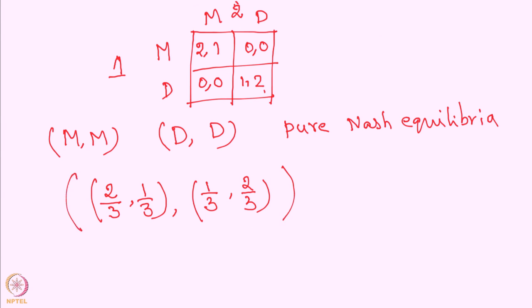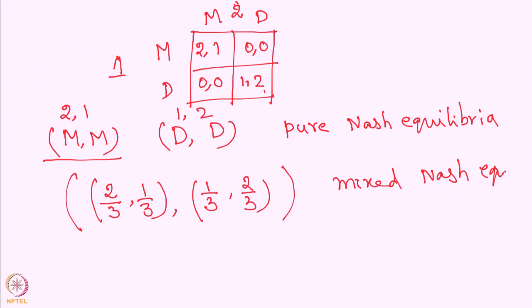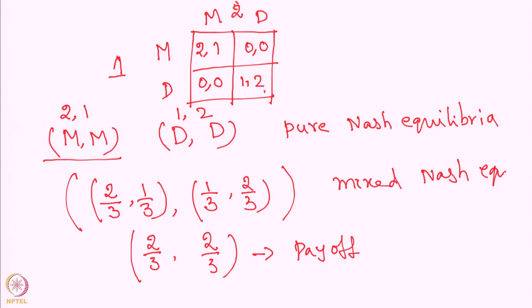This is a mixed Nash equilibrium, one can verify easily. Once we know this mixed Nash equilibrium, in MM the Nash payoffs that they receive are (2, 1), and in DD it is (1, 2) — player 1 receives 1 and player 2 receives 2. In the mixed Nash equilibrium, we can see that they will receive 2/3 each. These are the payoff vectors.